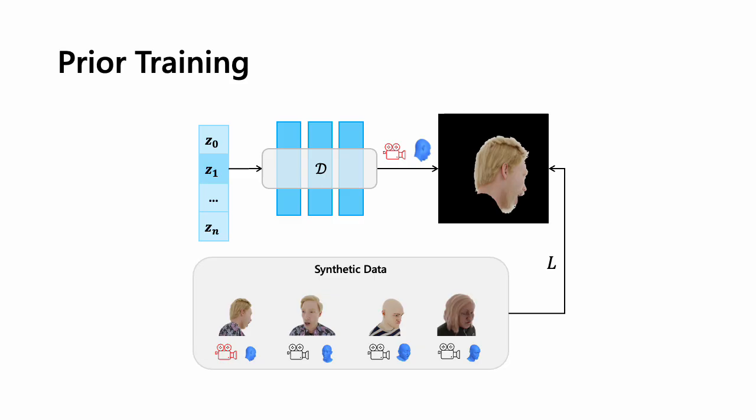We train our prior model as an autodecoder. Each subject in the dataset is assigned a latent vector Z. We then train our prior network to map these latent vectors, together with the camera and 3DMM parameters associated with each frame, to obtain the parameters of a Gaussian avatar. The result is a generative model of Gaussian avatars, as shown here.